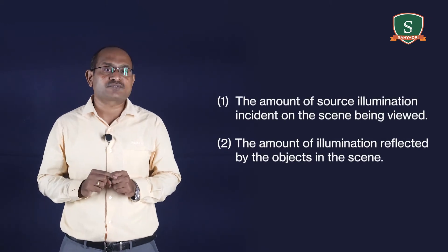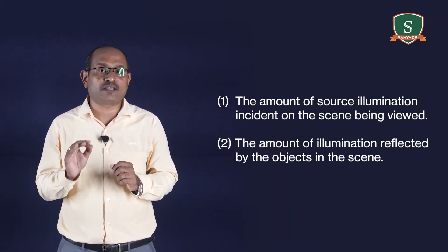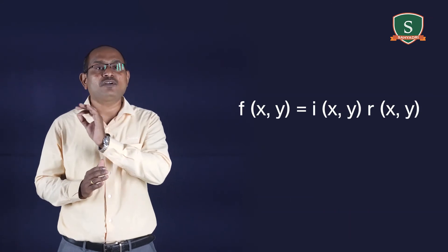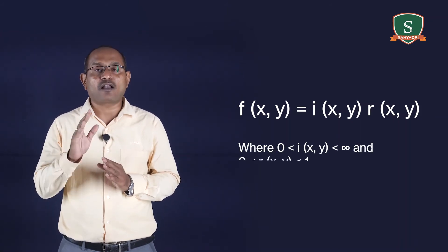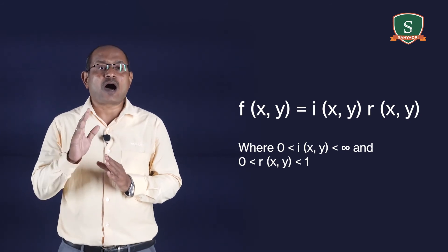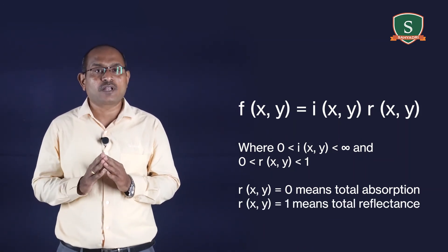The function f may be characterized by two components: one is the amount of source illumination incident on the scene being viewed, and the second is the amount of illumination reflected by the objects in the scene. These are called the illumination and reflectance components, denoted by i(x, y) and r(x, y) respectively. The two functions combine as a product to form f(x, y), that is f(x, y) = i(x, y) × r(x, y), where i(x, y) ranges between 0 to infinity and r(x, y) ranges between 0 to 1. r(x, y) = 0 means total absorption and r(x, y) = 1 means total reflectance.